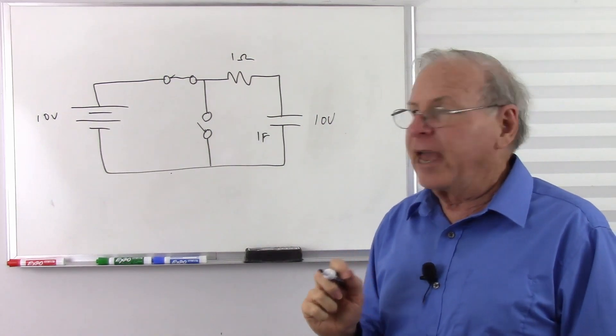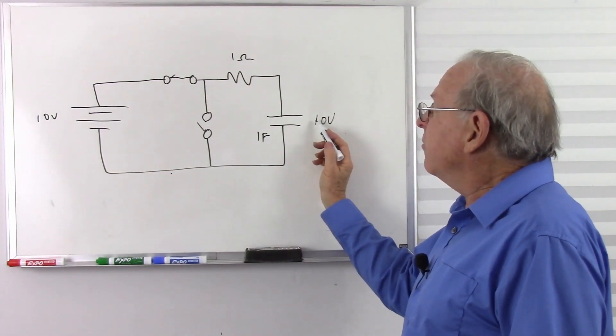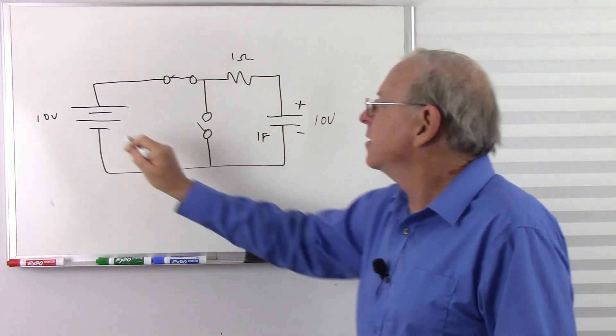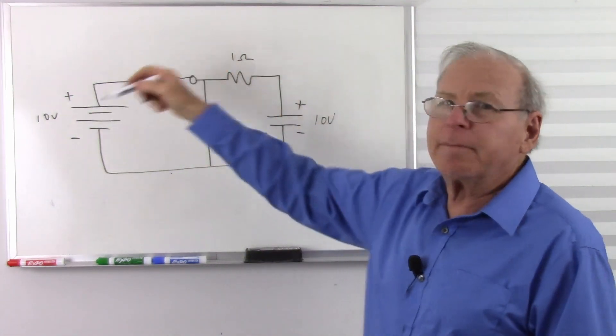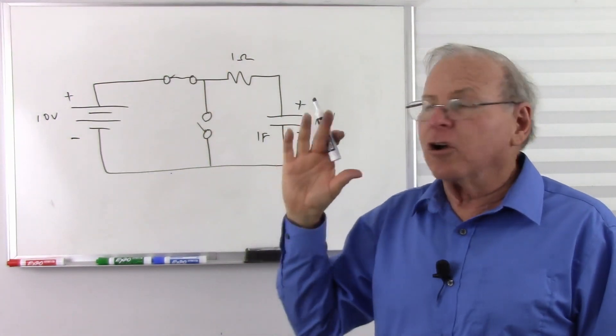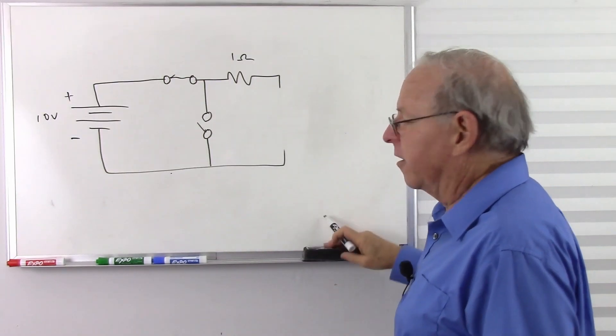So right now, how much current do we have? Well, this capacitor is charged up to that voltage, and it's pushing back just as hard. There is no current flowing. It looks just like there's an open circuit here.